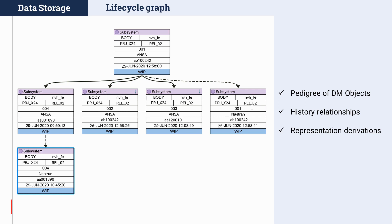This tree is called the Lifecycle Graph and is accessed through the respective option in the context menu of DM objects. It displays history relationships — for example, previous and next versions of a subsystem — as well as representation derivations, in other words, the relationship between the ANSA and solver representation of a subsystem. With the use of the Lifecycle Graph, ANSA now offers a quick and easy overview of a DM object's life cycle.